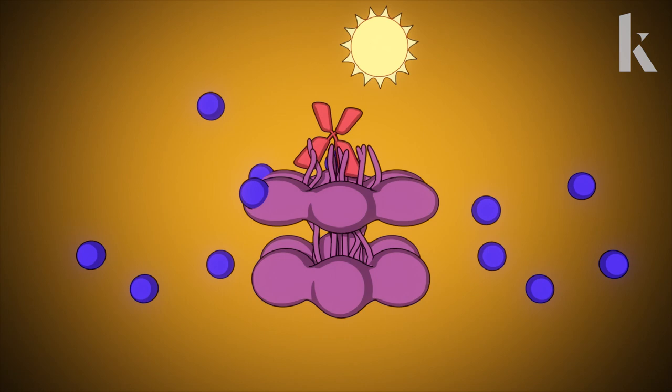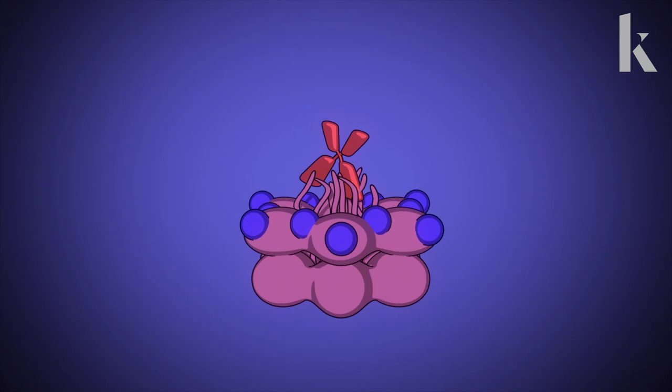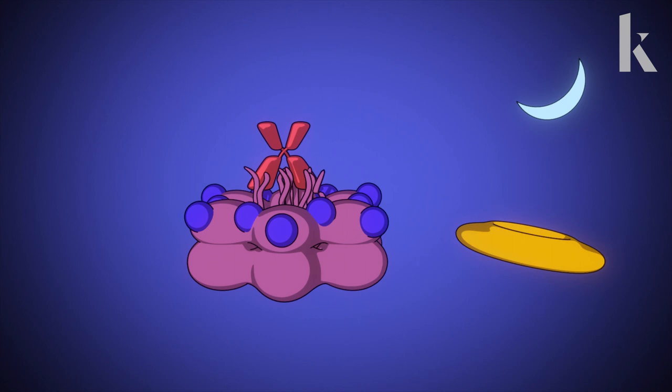This prompts Kai-C to slowly and methodically attach phosphates to itself. Tick-tock, tick-tock. By dusk, Kai-C's top donut is stiff from being covered with phosphates. This makes the bottom donut bulge out.